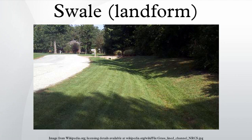Trees and shrubs along the swale can provide shade which decreases water evaporation. The term swale or beach swale is also used to describe long, narrow, usually shallow troughs between ridges or sandbars on a beach, that run parallel to the shoreline.